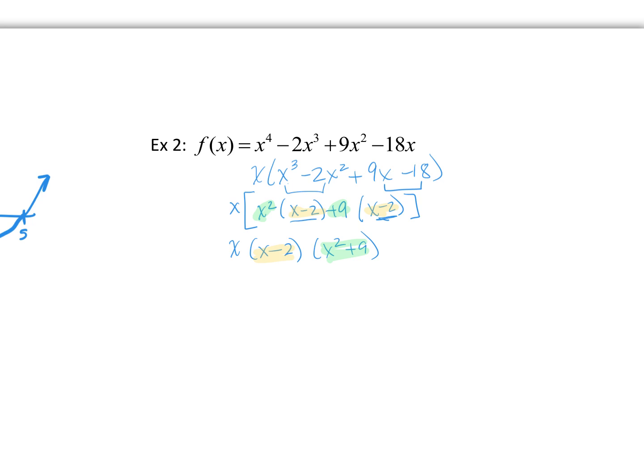From here, I can find my other solutions by doing what we've been doing. So, let's solve it. This means that there's an x of 0. This means there's an x of what? Positive 2, right?